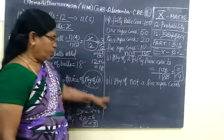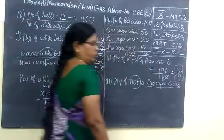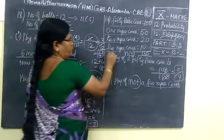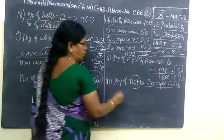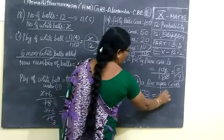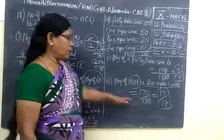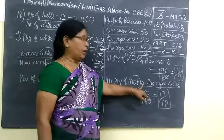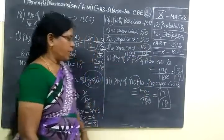Next we want to find probability of not a 5-rupee coin. So that you leave it. So totally 170. So 170 by 180, then 17 by 18. Because we are not selecting 5-rupee coins, we are selecting other coins. Other coins are going to be 170. So 17 by 18.